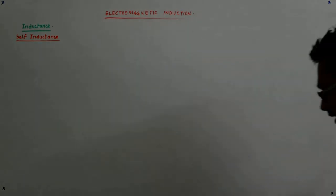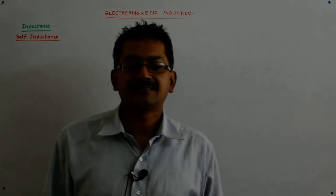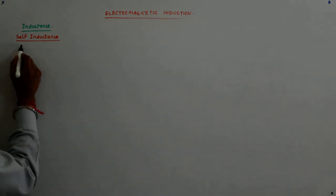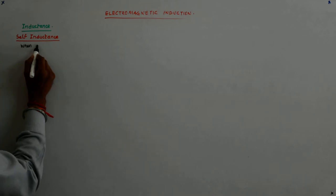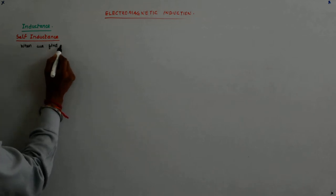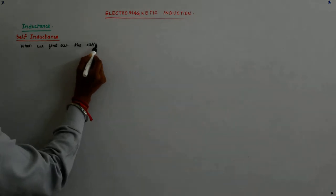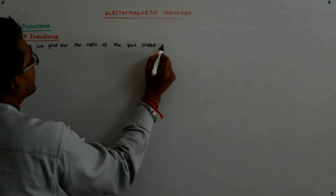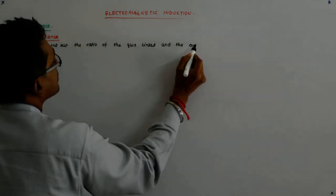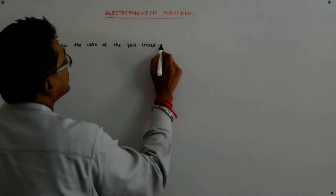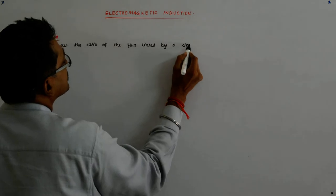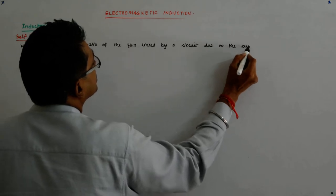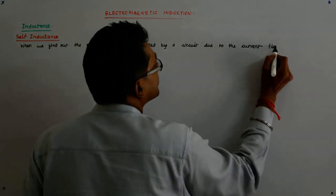Now we come to the concept called self-inductance. As the term is self-explanatory, it is when we find out the ratio of the flux linked by a circuit due to the current flowing in the same circuit.